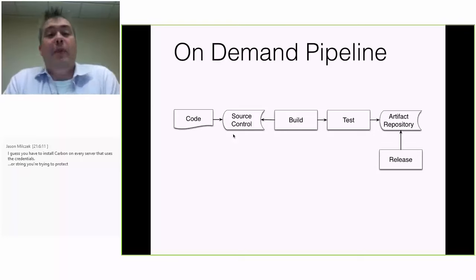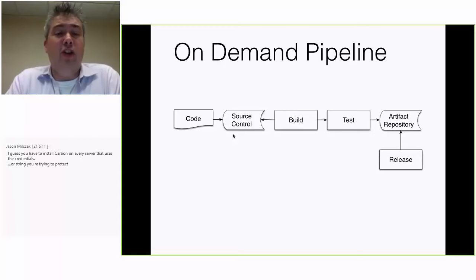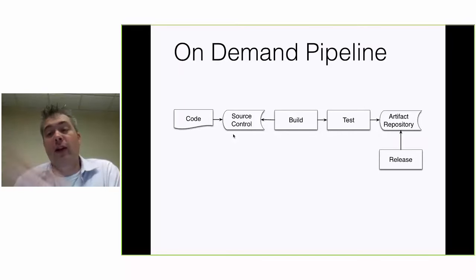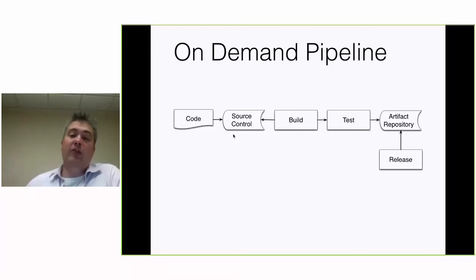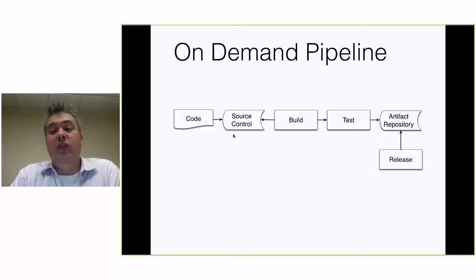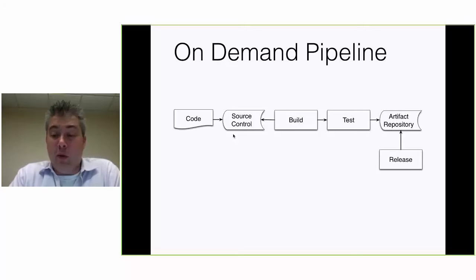An on-demand pipeline is the ideal state for independent PowerShell modules. Once the code gets checked into source, you build a package of your module, run tests against it, and stash that version in an artifact repository. When you're ready to release — when you've accumulated enough changes — you hit a button or run a script that releases the package. This requires a bit of infrastructure: someplace to store your packages, something to run your build pipeline, and something to run your release pipeline. Tools like Jenkins work very well for this. In Jenkins, I believe the release process is called promotion — you create an artifact and then promote it.